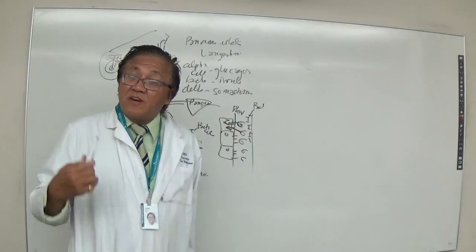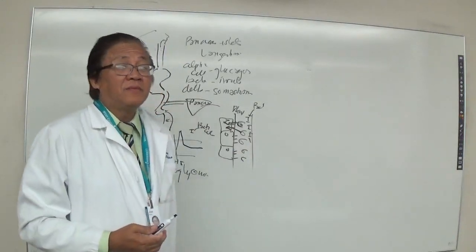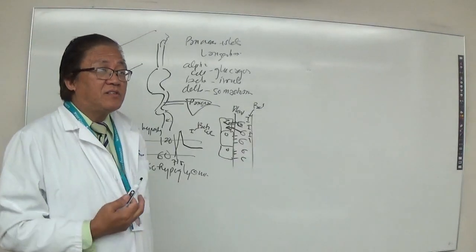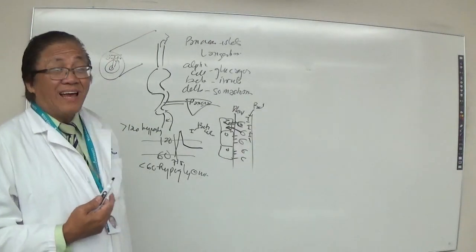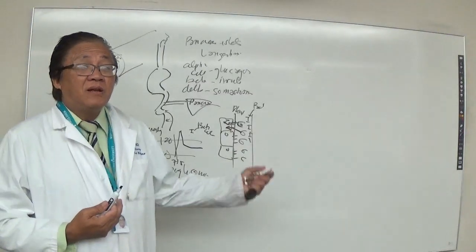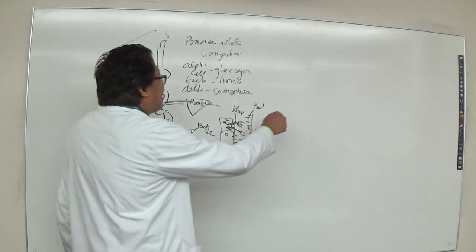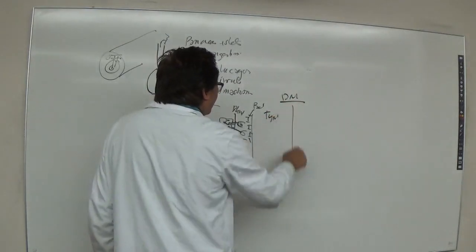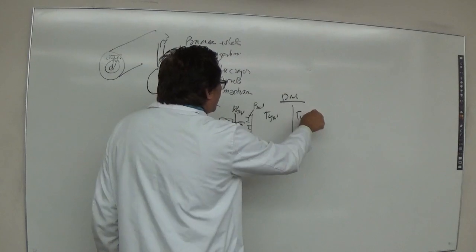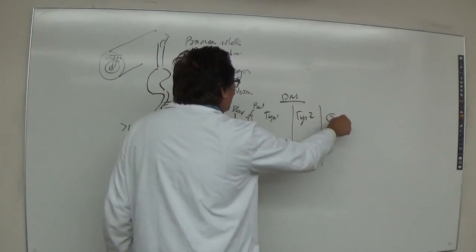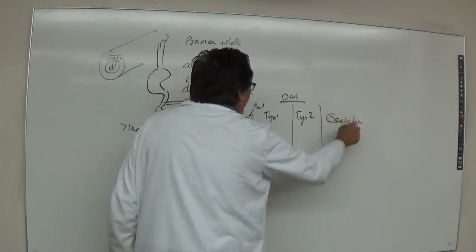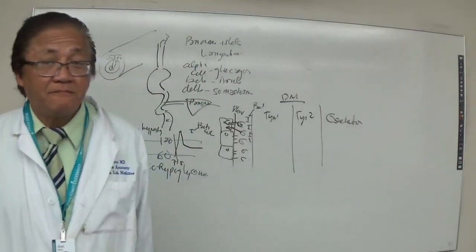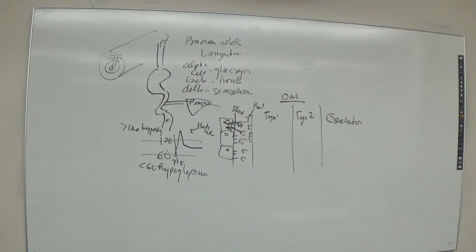If you have nine doors you need approximately nine keys of insulin to facilitate the entry of glucose. In diabetes mellitus there are three types: type one, type two, and gestational diabetes in pregnant women.